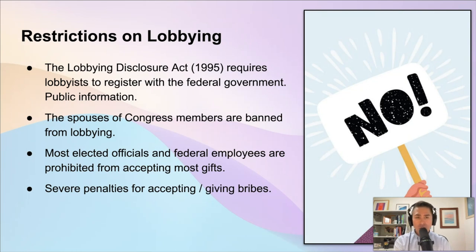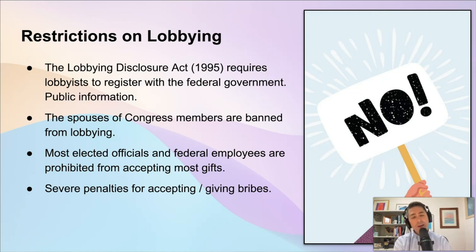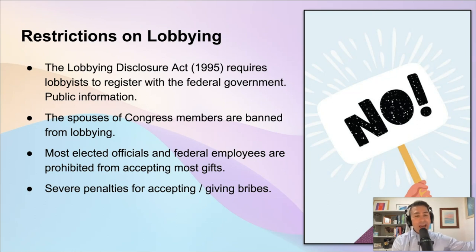When it comes to restrictions on lobbying, one of the most important laws is the Lobbying Disclosure Act, passed in 1995. It says that if you're a lobbyist and you spend more than 20% of your time lobbying, you have to register with the federal government. This ensures the government — and more importantly, the American people — know who is contacting members of Congress.